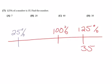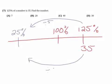25 can fit into 125 five times. So, if we divide this by 5, we get 25%. So, we divide 35 by 5 also. 35 divided by 5 is 7.